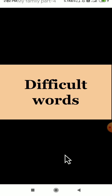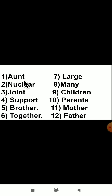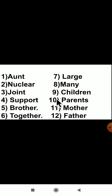Let us see some of the difficult words. The first word is 'aunt' (A-U-N-T). Next is 'nuclear' (N-U-C-L-E-A-R). Then 'joint' (J-O-I-N-T), 'support' (S-U-P-P-O-R-T), 'brother' (B-R-O-T-H-E-R), 'together' (T-O-G-E-T-H-E-R), 'large' (L-A-R-G-E), 'many' (M-A-N-Y), 'children' (C-H-I-L-D-R-E-N), 'parents' (P-A-R-E-N-T-S), 'mother' (M-O-T-H-E-R), and 'father' (F-A-T-H-E-R).